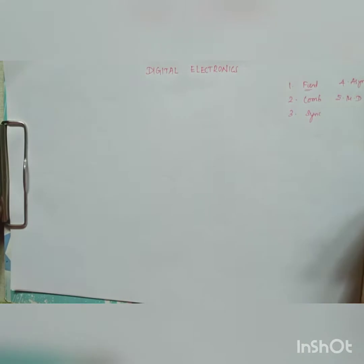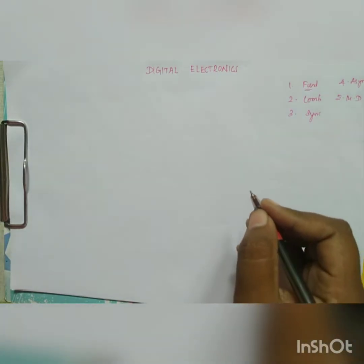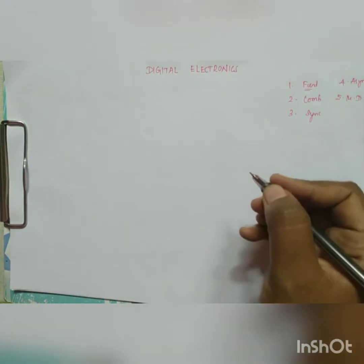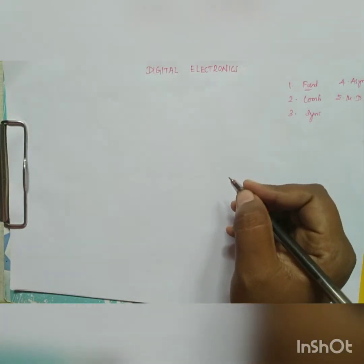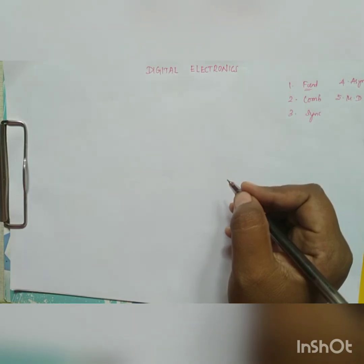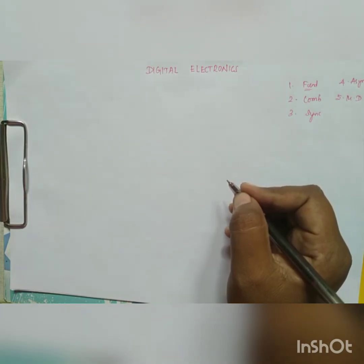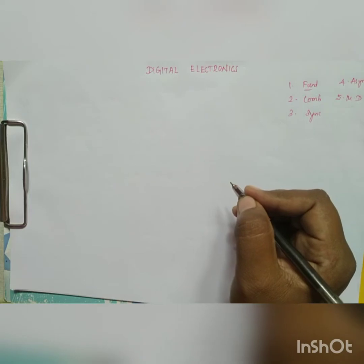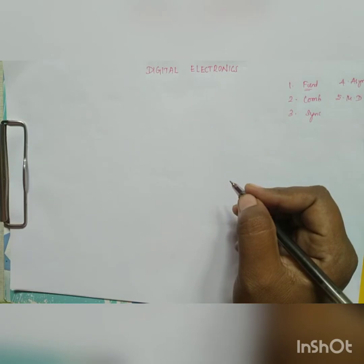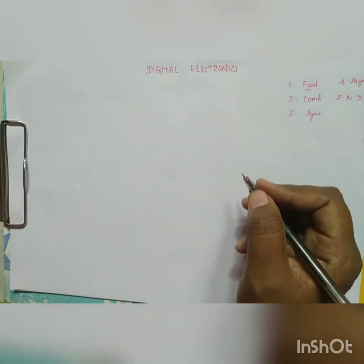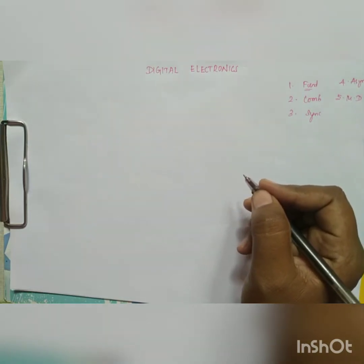In the fundamentals unit, we are going to study number system, min term, max term, SOP, POS, K-map, Boolean algebra, and logic gates. The second unit is combinational circuit.